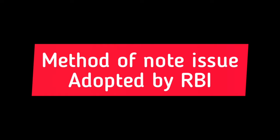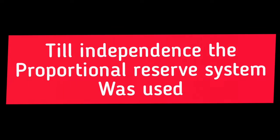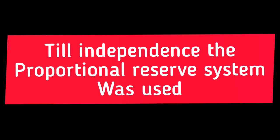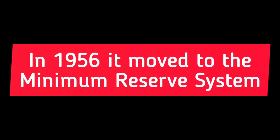Let us look at the method of note issuance adopted by the Reserve Bank of India. The RBI Act 1934 originally provided for the Proportional Reserve System of note issuance. According to this system, the RBI had to maintain at least 40% reserves against note issuance in gold coins, bullion, and foreign securities.